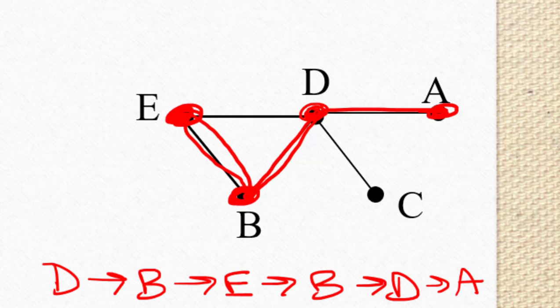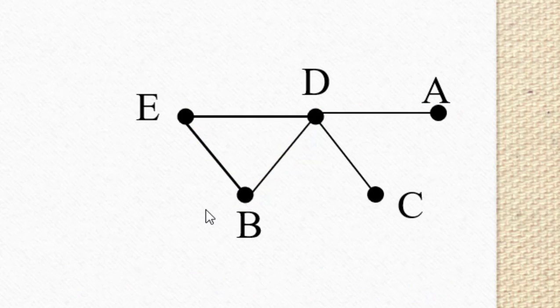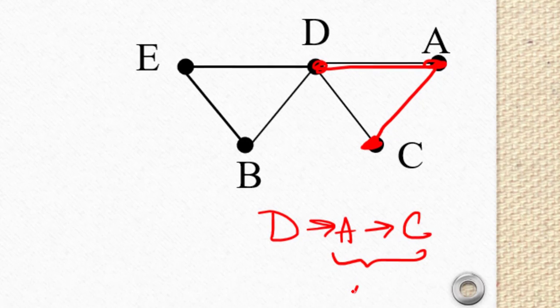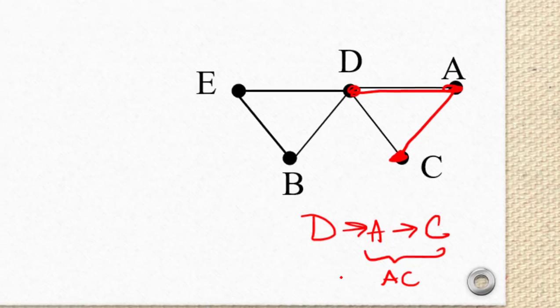The only thing you can't do on a walk is to go off of the graph. So in other words, I could not go from D to A and then to C. That would not be an example of a walk because the edge AC doesn't exist in this graph.